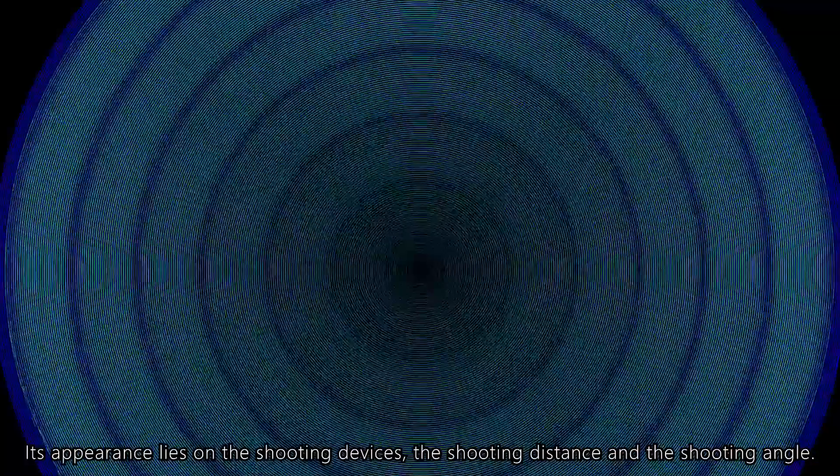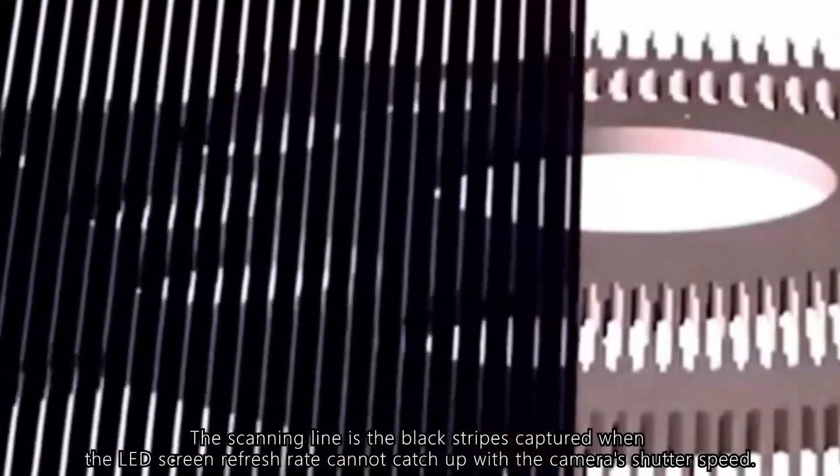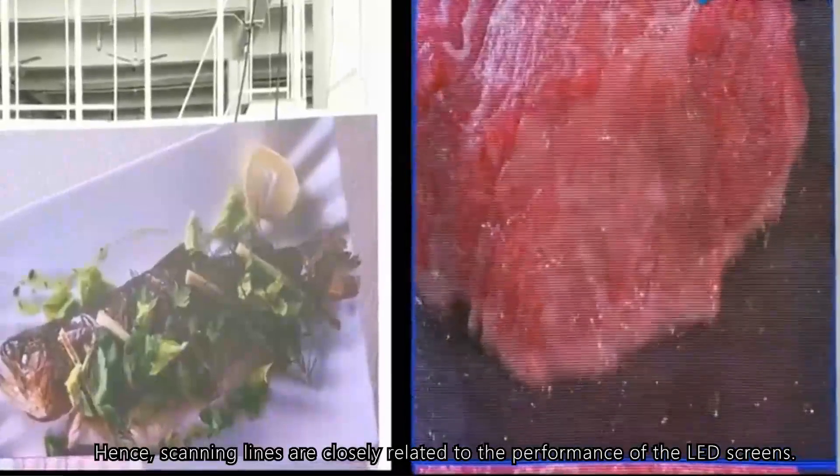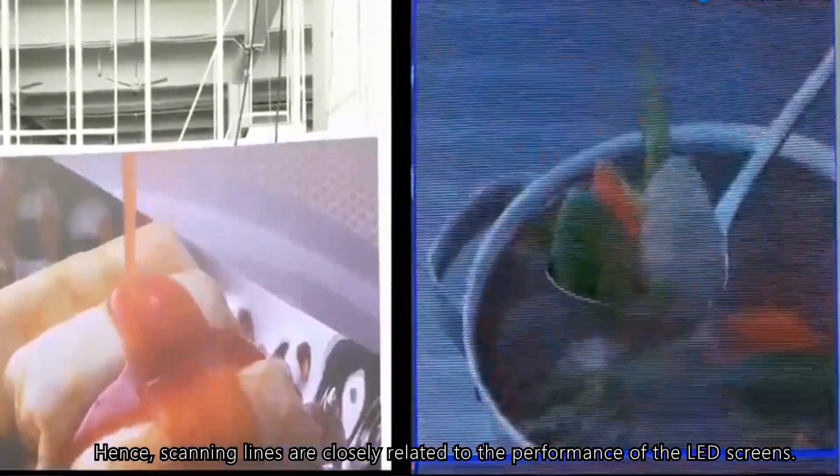Its appearance depends on the shooting devices, the shooting distance, and the shooting angle. The scanning line is the black stripes captured when the LED screen refresh rate cannot catch up with the camera shutter speed. Hence, scanning lines are closely related to the performance of the LED screens.